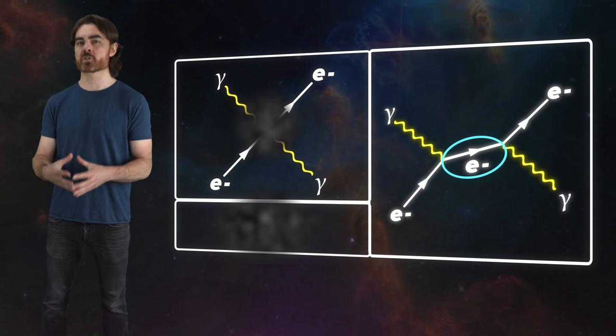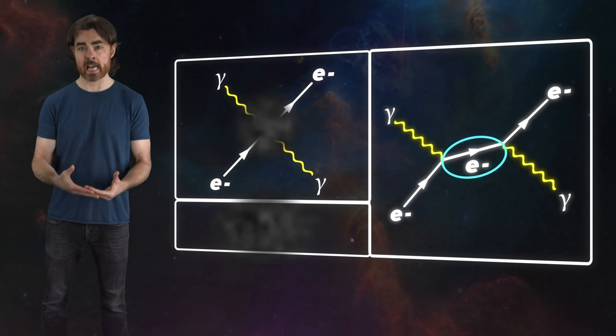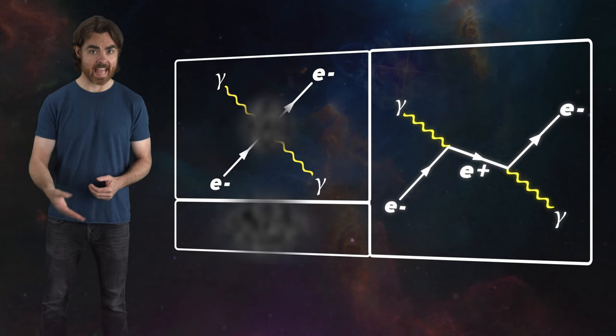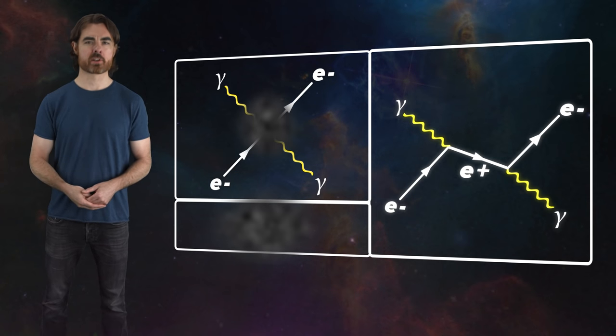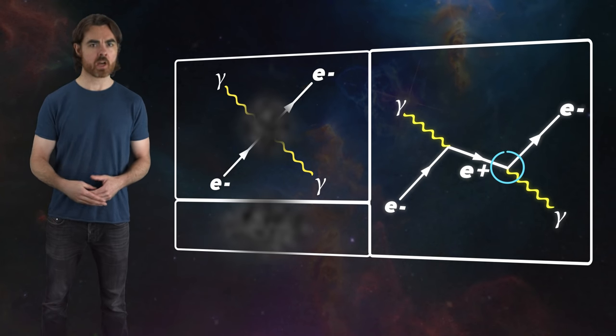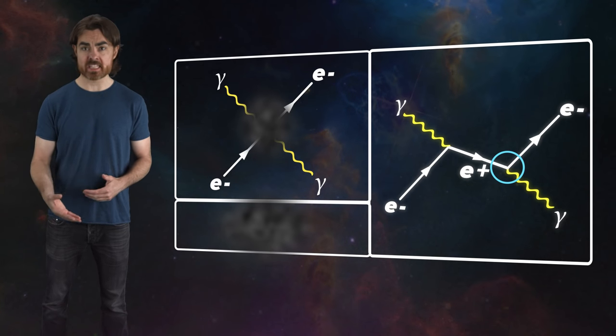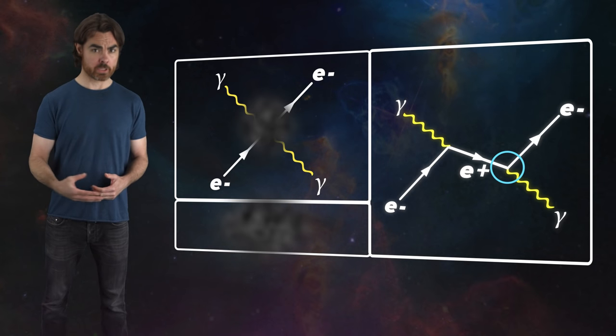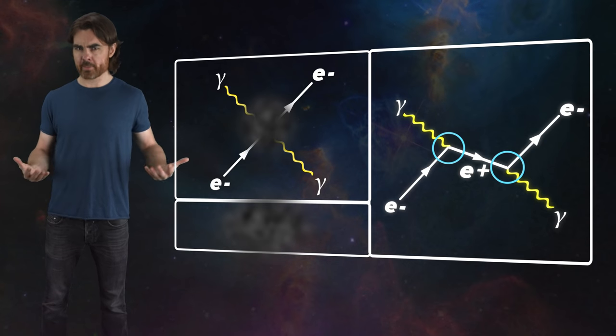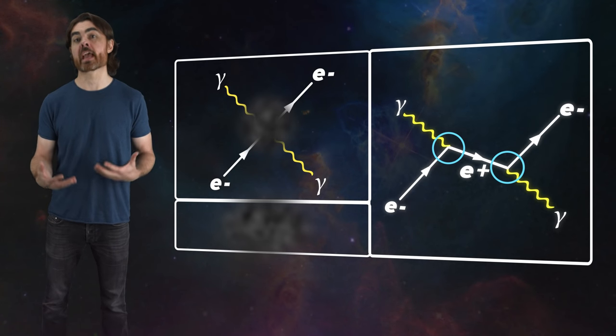Mathematically, a time-reversed electron looks exactly like a positron. Like this. The same particles go in and out, but now the interactions look very different. Instead of an electron emitting and then absorbing a photon, we have, on one side, that incoming photon creating an electron-positron pair. That new electron becomes our outgoing electron, but the positron annihilates with the incoming electron to produce the outgoing photon. These may seem like wildly different processes, but in the math represented by Feynman diagrams, they're exactly the same.